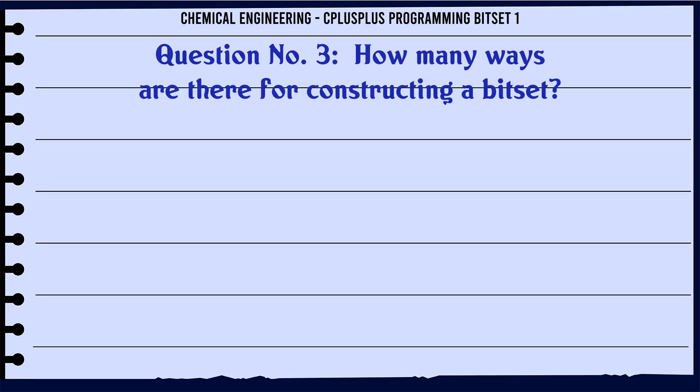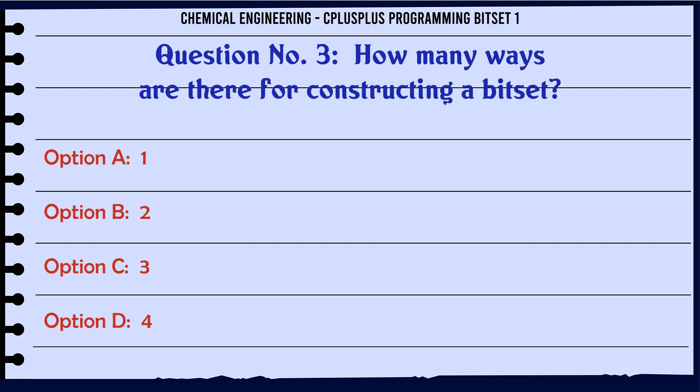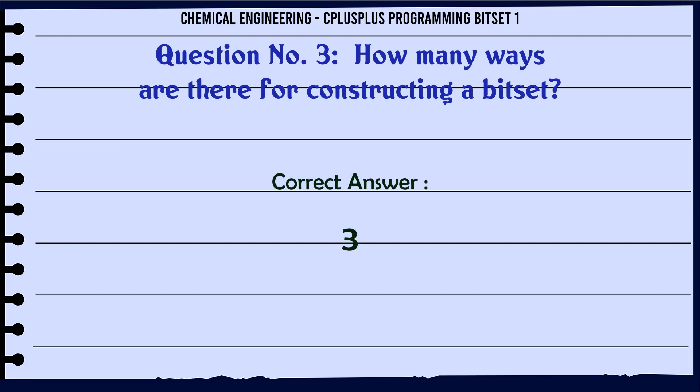How many ways are there for constructing a bitset? A. 1. B. 2. C. 3. D. 4. The correct answer is 3.